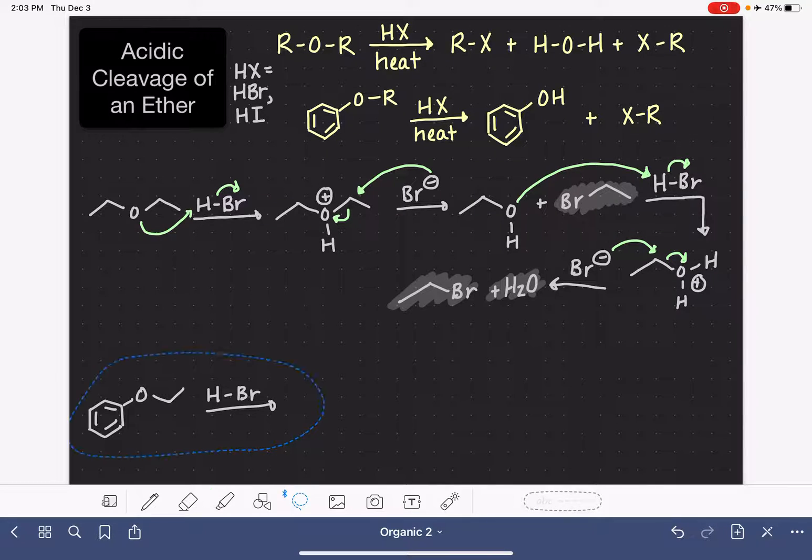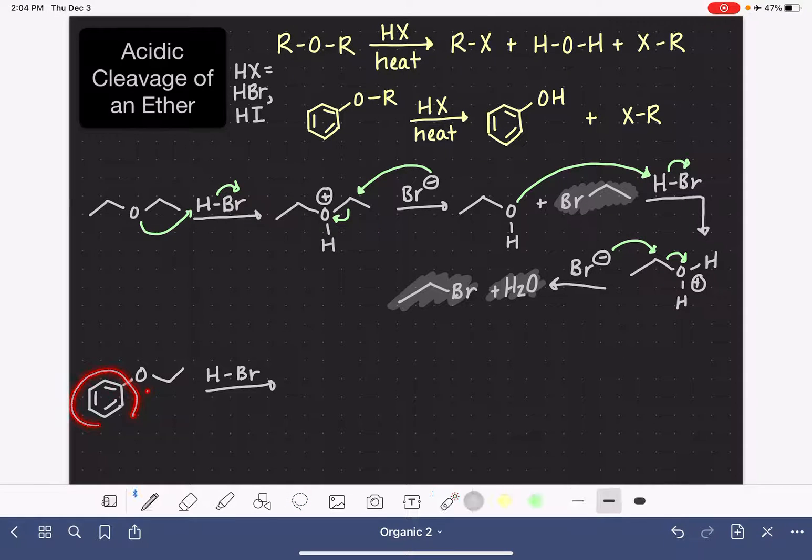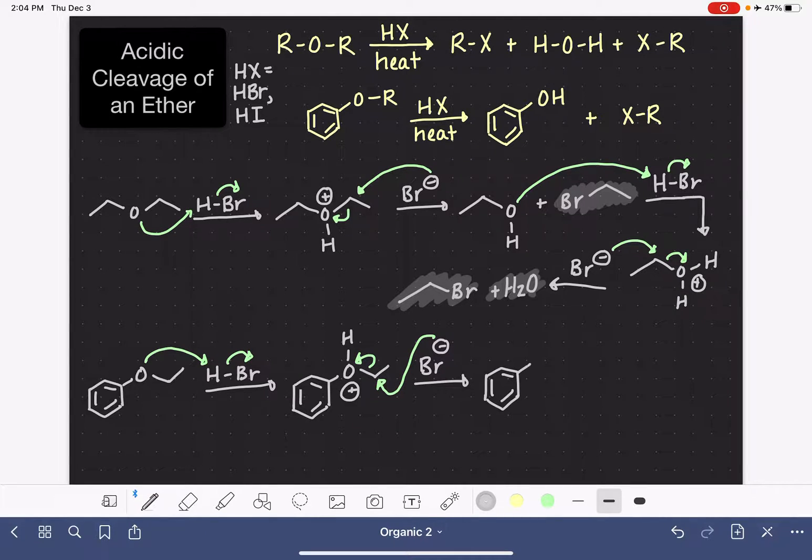For this reaction with an ether that has a benzene ring attached directly to the oxygen, the reaction starts the same way. We start by protonating that oxygen with the strong acid. The bromide ion then does the SN2 reaction on the carbon, breaking the carbon-oxygen bond. Just like in the first reaction, we're forming an alcohol and our alkyl halide. There's product number one.